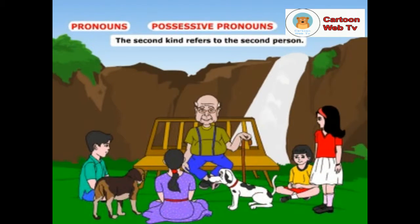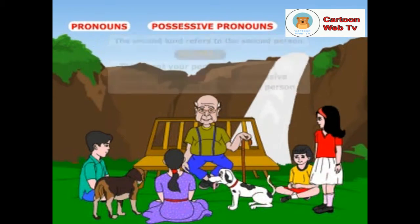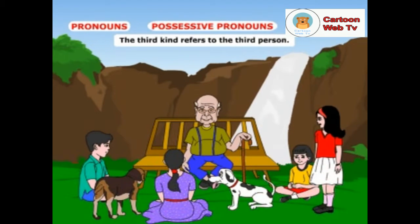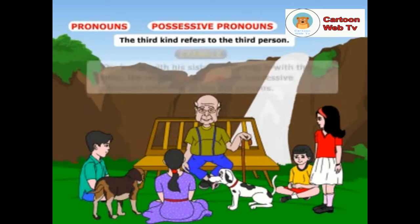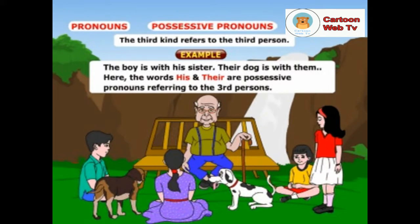The second kind refers to the second person. Example: this is not your pen. Here, the word your is the possessive pronoun referring to the second person. And the third kind refers to the third person. Look at the example: the boy is with his sister. Their dog is with them. Here, the words his and their are possessive pronouns referring to the third person.